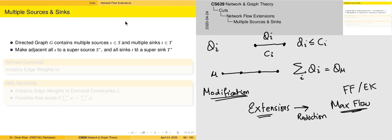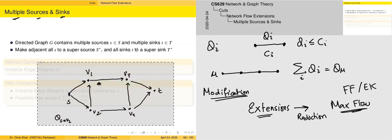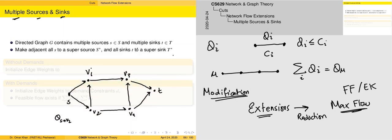One of the first extensions we are going to consider is multiple sources and multiple sinks. In the standard maximum flow problem we only consider the presence of a single source and a single sink. In this case we may be looking at a graph which consists of multiple of these vertices, and the problem tends to be a little bit different.